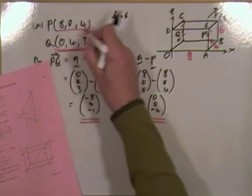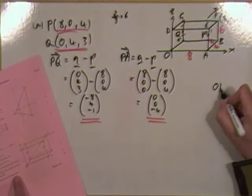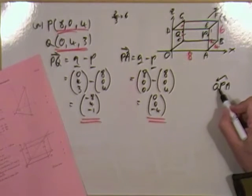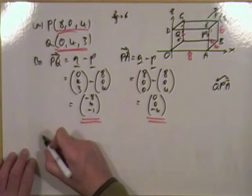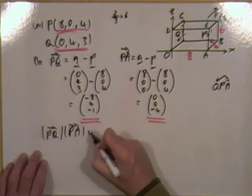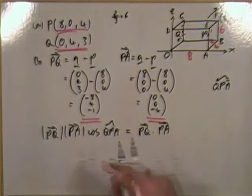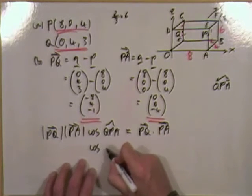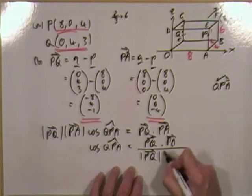It's raining marks! Last part — find the size of angle QPA. If asked to find angle QPA, you want the vectors radiating away from P — that's PQ and PA. P is the vertex of the angle. The formula is: PQ dot PA equals the length of PQ times the length of PA times cosine of the angle. So cosine of the angle equals PQ dot PA divided by the length of PQ times the length of PA.